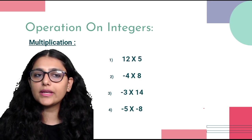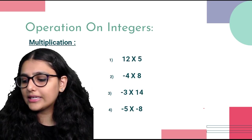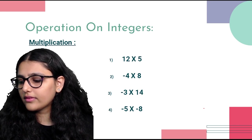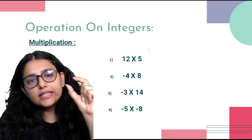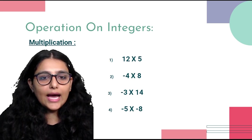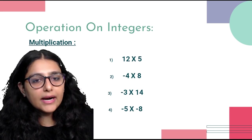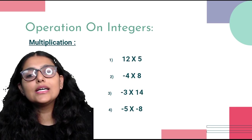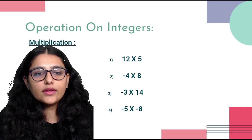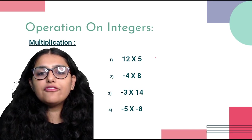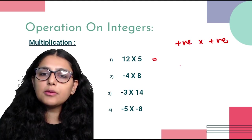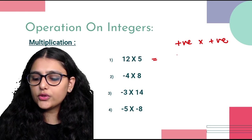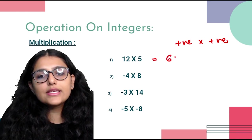Now let's look at the operation on integers for multiplication. In multiplication and division, the rule changes slightly — we do not look at which number is larger or smaller; we only look at the signs. A positive number multiplied by a positive number gives a positive answer. So 12 × 5 = positive 60.